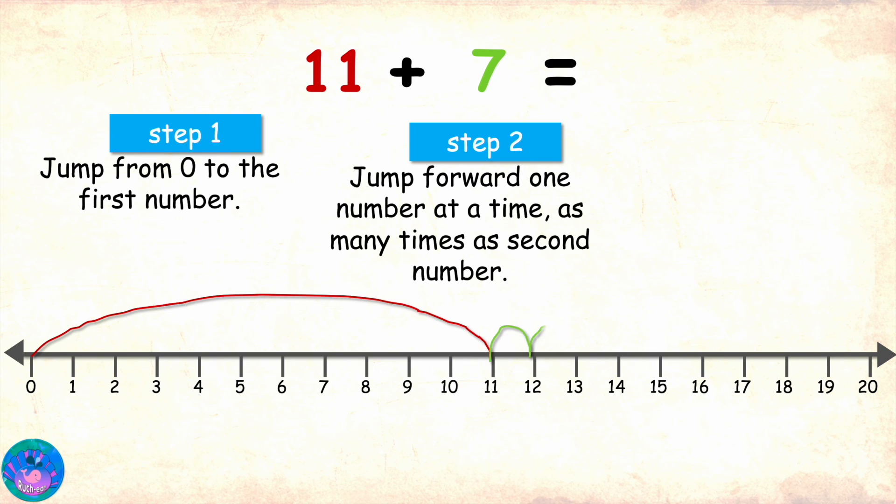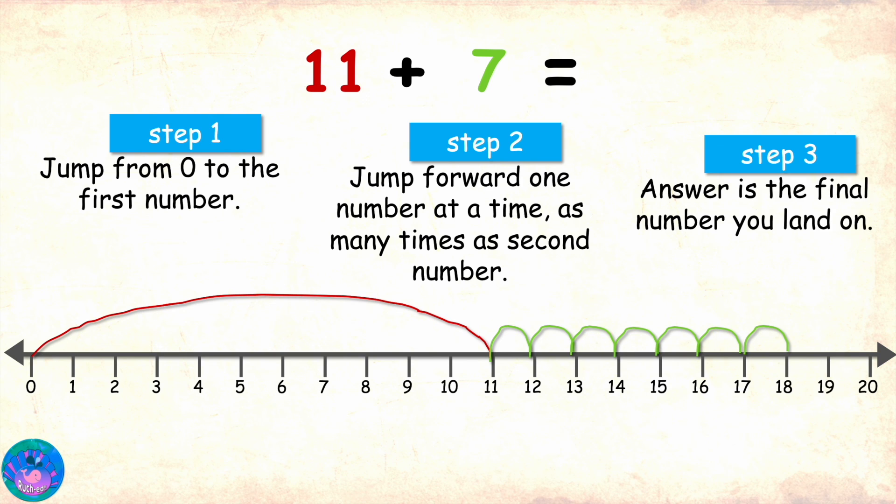1, 2, 3, 4, 5, 6, 7. Step 3. We note down the number we have landed on as that is the answer. We landed on 18. So, 11 plus 7 equals 18.